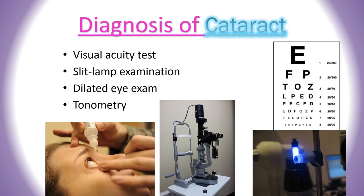Lastly, a tonometry is performed to measure the pressure inside the eye. These are the basic tests, but more tests can be done to gain more information about the eye structure.